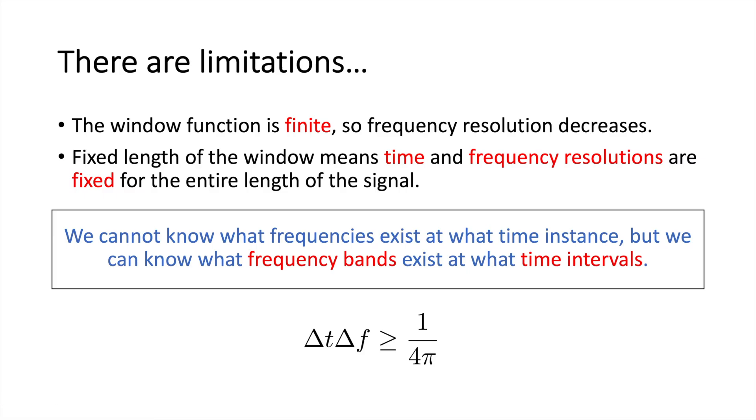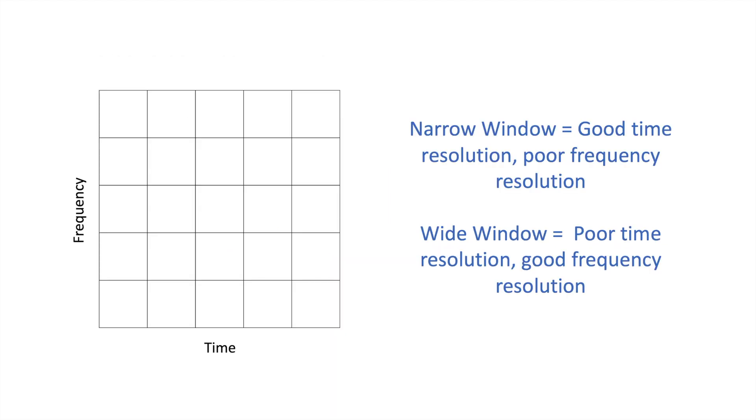So this is a principle in physics we cannot escape from, but we can improve on it. So looking at the frequency time plane for short time Fourier transform, we see that at all increasing times and higher frequencies, the frequency and time resolution are fixed, given by squares of equal area. A narrow window will give good time resolution, but bad frequency resolution. On the other hand, if our window is wide, we get poor time resolution, but good frequency resolution of our signal.